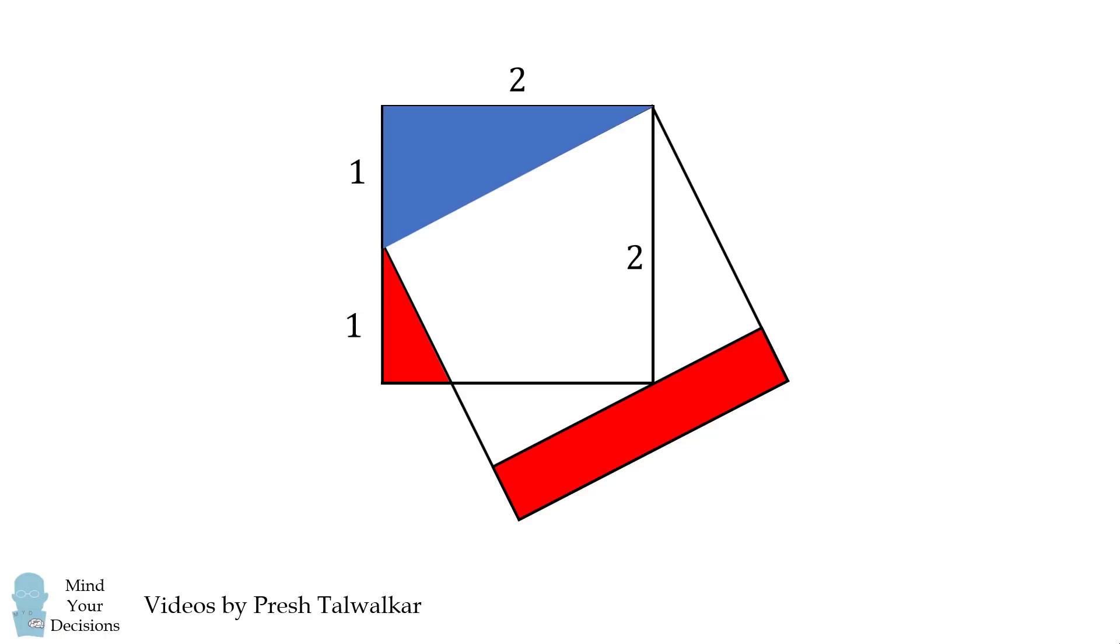We can then use the Pythagorean theorem to solve that the hypotenuse of this 1-2 triangle will be equal to the square root of 5. Notice this will be the length of the larger square side.